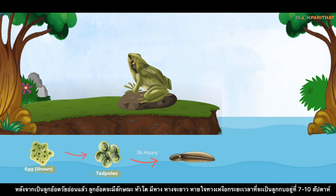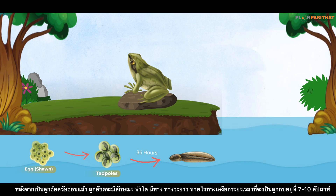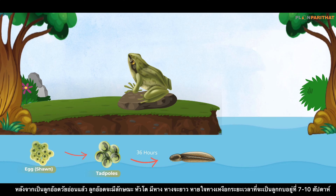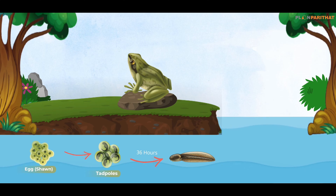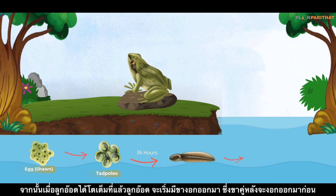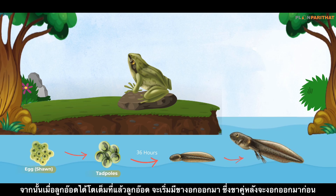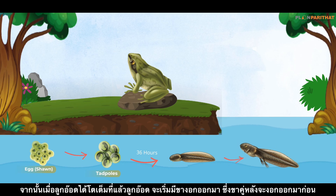A young tadpole would have a big head and a long tail. It would breathe through its gills and remain at this stage for seven to ten weeks.